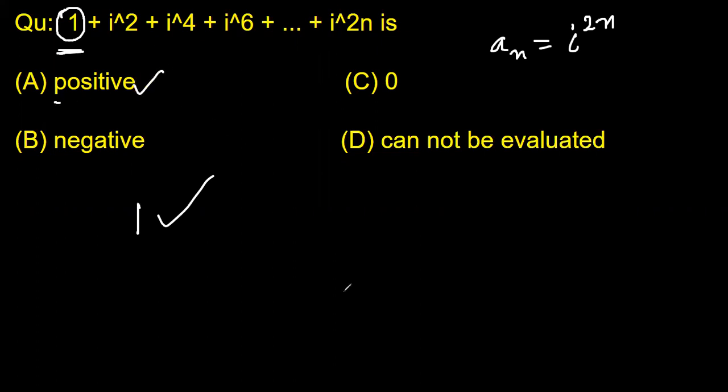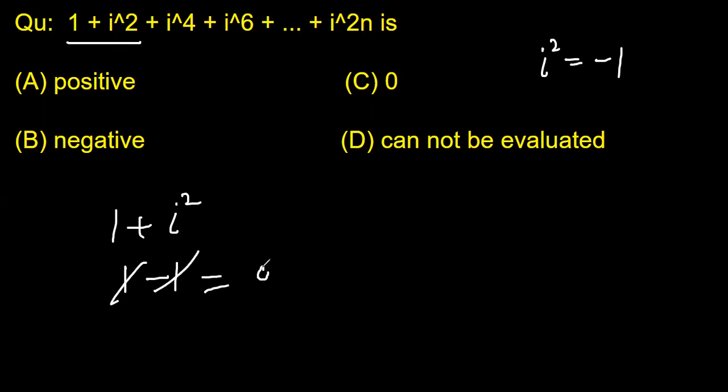Find the sum of the first two terms now. Sum of the first two terms would be sum of this 1 plus 1 plus iota square, and we know iota square is equal to negative 1. So it is 1 plus minus 1, now it is 0.